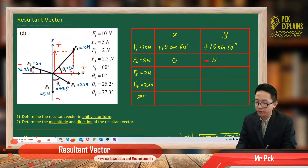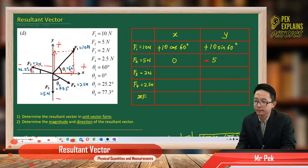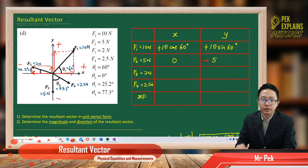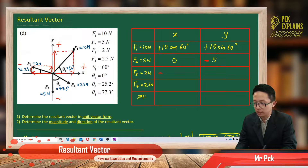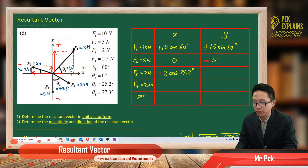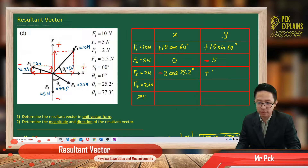For F3, two Newton — it also has two components because it has angle theta. For the X component, it is going to the left, so going to the left is negative. We must put the negative sign: negative 2 cos 25.2 degrees. For the Y component, it is going up, so it's positive, and we use sine theta: positive 2 sin 25.2 degrees.